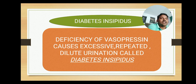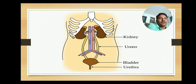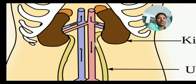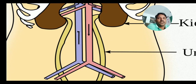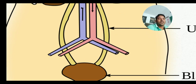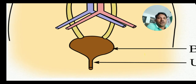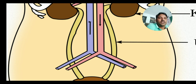Vasopressin makes the urine concentrated. Once the urine is concentrated, it is collected into the ureters. You can see the ureter part here — the ureters collect urine from the kidneys and take it into the urinary bladder. From the urinary bladder, through the urethra, the urine is expelled out. This is how urine is formed and excreted.